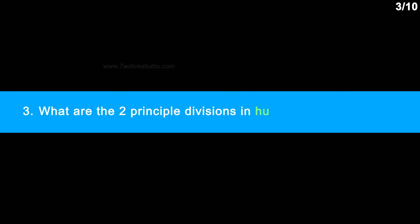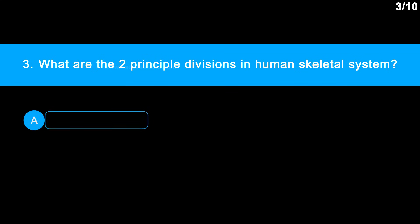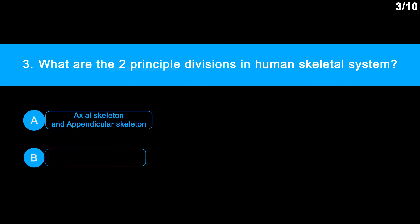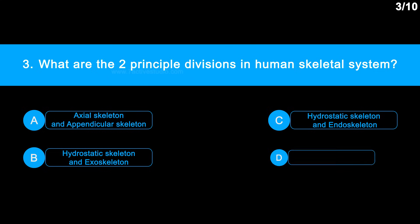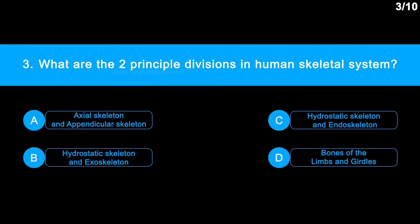Question 3: What are the two principal divisions in the human skeletal system? Option A: axial skeleton and appendicular skeleton. Option B: hydrostatic skeleton and exoskeleton. Option C: hydrostatic skeleton and endoskeleton. Option D: bones of the limbs and girdles.